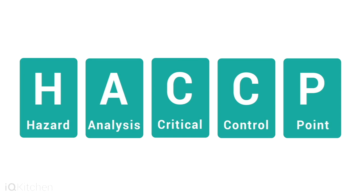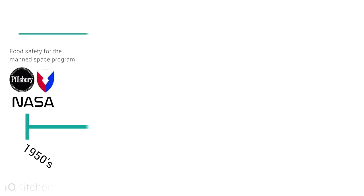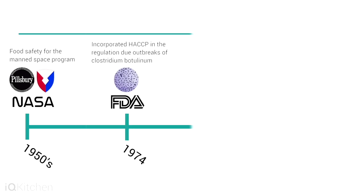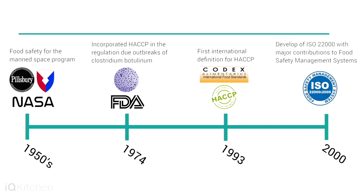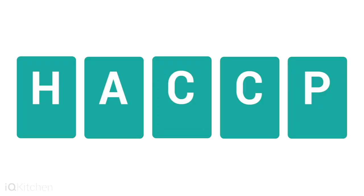HACCP was developed in the late 1950s by the Pillsbury Company, the Natick Research Laboratories, and NASA. They built a quality system to ensure food safety for the space program. In 1974, FDA incorporated HACCP in the regulations due to outbreaks of Clostridium botulinum in canned food. In 1993, the Codex Alimentarius Commission provided the first international definition for HACCP. And in 2000, ISO 22000 was developed with major contributions to food safety management systems. HACCP has become a global standard for food safety.